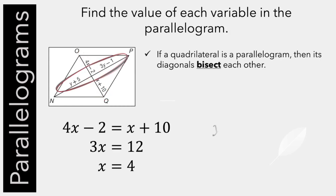Let's try the other diagonal, y plus 5 equals 3y minus 1. Solving for y, we see that y equals 3.